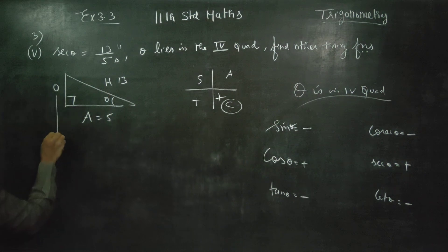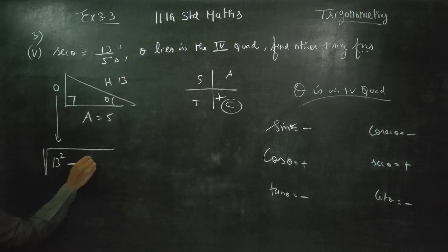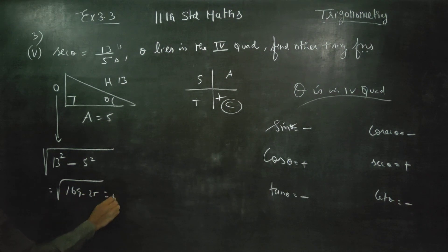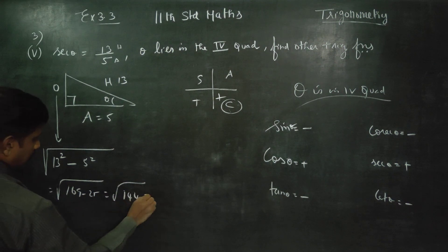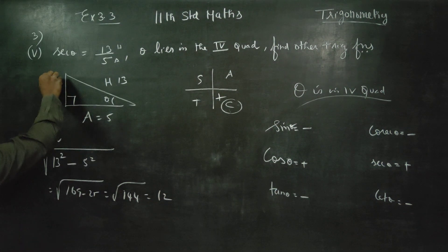Opposite is equal to the square root of hypotenuse squared minus adjacent squared: root of 169 minus 25, which is root of 144. So opposite is 12.